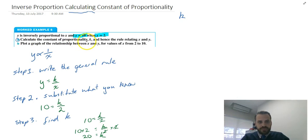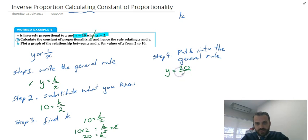Calculate the constant of proportionality, k. We did it. This next bit says and hence the rule relating x and y. Now what they mean by that is the general rule is y equals k on x, but the specific rule here, step four, put k into the general rule. So the general rule is y equals k on x, but the specific rule for this question is y equals 20 on x.